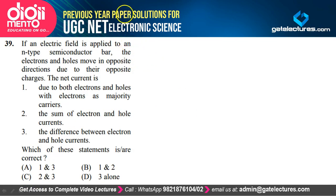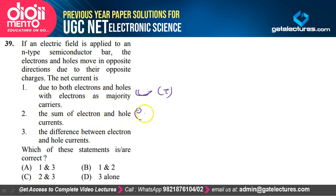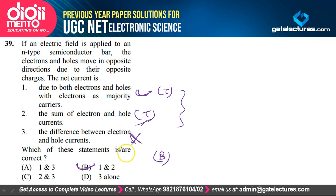When an electric field is applied to an N-type semiconductor bar, electrons and holes move in opposite directions due to their opposite charges. The net current is due to both electrons and holes, with electrons as majority carriers. The net current equals the sum of electron and hole currents — not the difference. So only statements 1 and 2 are true — option B is correct.